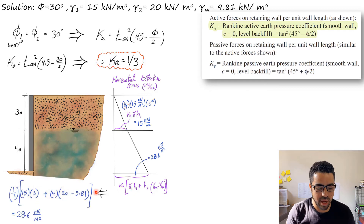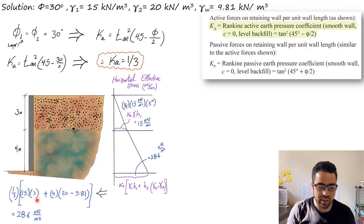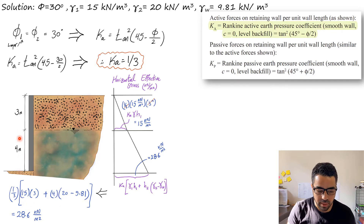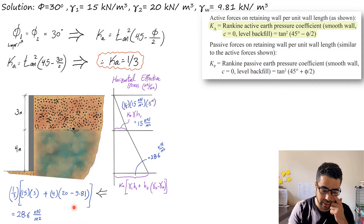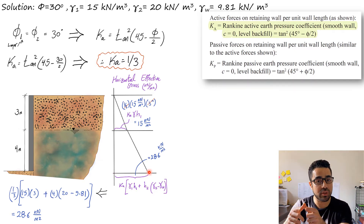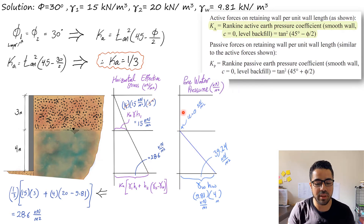So the horizontal soil stress at the base is: (1/3) × [(15 × 3) + (20 − 9.81) × 4]. Here, 3 is the depth of Layer 1, 15 is its density, 4 is the depth of Layer 2, 20 is its saturated density, and 9.81 is the unit weight of water. This gives us 28.6 kN/m² — the horizontal stress from the soil alone.